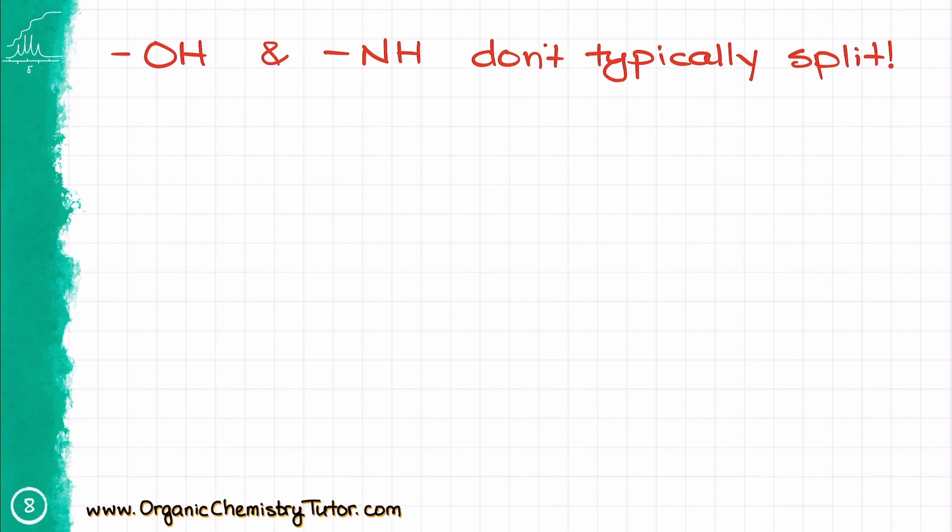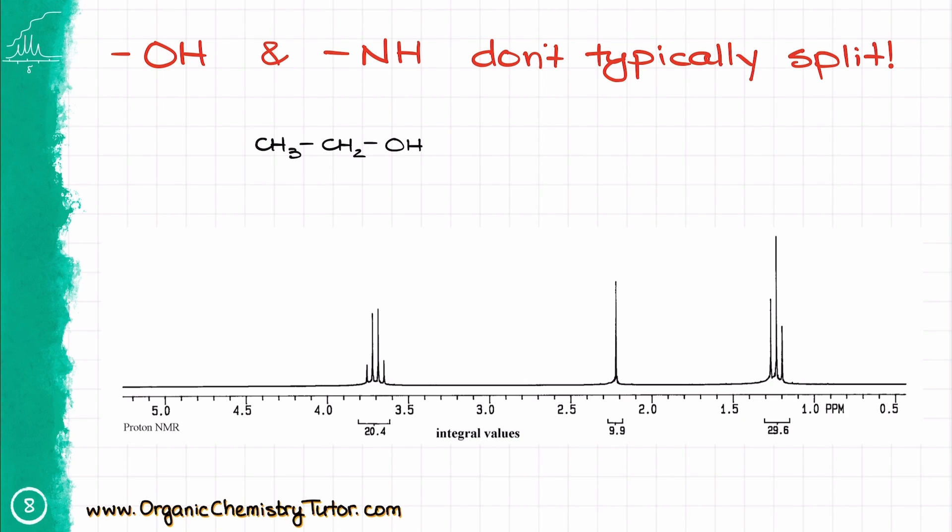Also, another thing to keep in mind that groups that are capable of hydrogen bonding like OH and NH, they typically do not split with their neighbors and they do not get split from the neighbors. So, for instance, here is the spectrum of ethanol. Group A here sees the CH2, so it's a triplet.